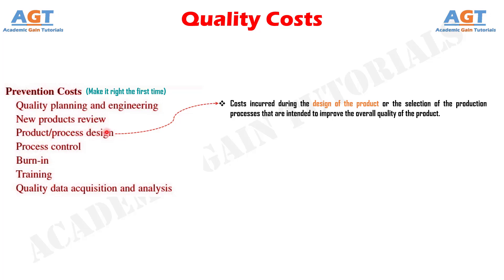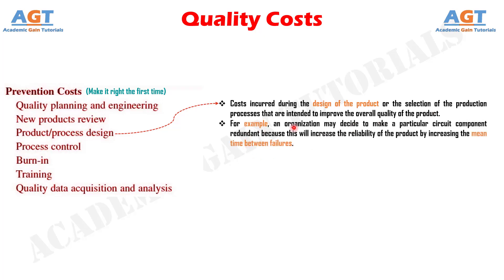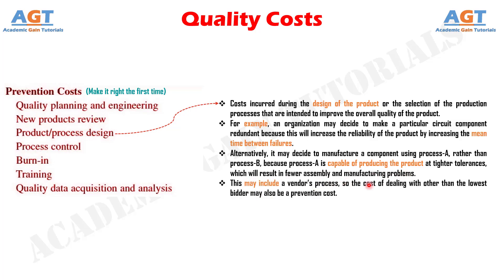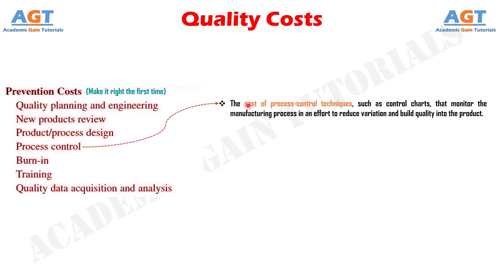Number 3, product or process design — costs incurred during the design of the product or the selection of the production processes that are intended to improve the overall quality of the product. For example, an organization may decide to make a particular circuit component redundant to increase reliability by increasing the mean time between failures. Alternatively, it may choose process A over process B because process A produces the product at tighter tolerances, resulting in fewer assembly and manufacturing problems. The cost of dealing with other than the lowest bidder may also be a prevention cost. Number 4, process control — the cost of process control techniques, such as control charts, that monitor the manufacturing process in an effort to reduce variation and build quality into the product.